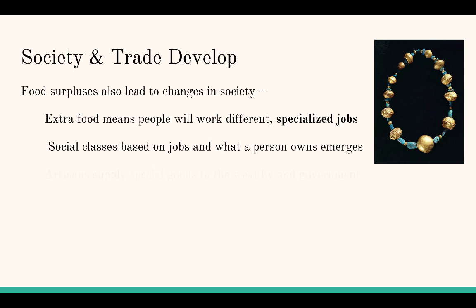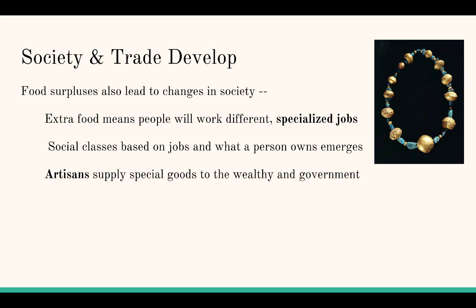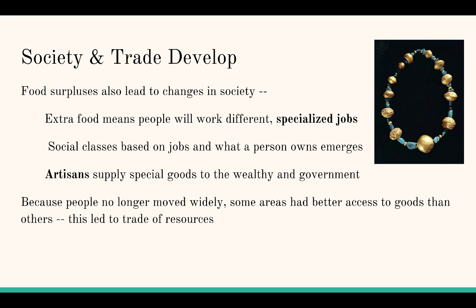Artisans — jewelry makers, weaponsmiths, potters — begin supplying special goods to the elite, the government, and religious leaders. Head priests enjoy very high status alongside monarchs and nobles. People are also no longer moving widely — they're fixed in one place. If you need resources, you travel up and down a river to find places willing to trade, which is essentially how trade began.